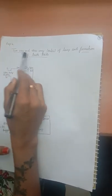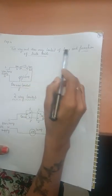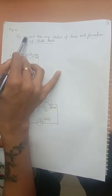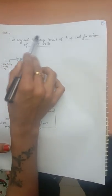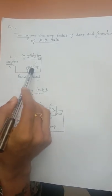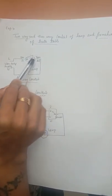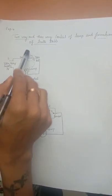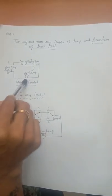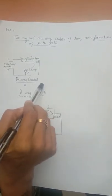Today we will be seeing experiment 4 of basic electrical engineering laboratory. The experiment title is two-way and three-way control of lamp and formation of a truth table. Before we get into what is two-way and what is three-way, we will see how a one-way control of switch looks like — that is, you have one switch and one lamp, and switching it on and off controls the lamp.